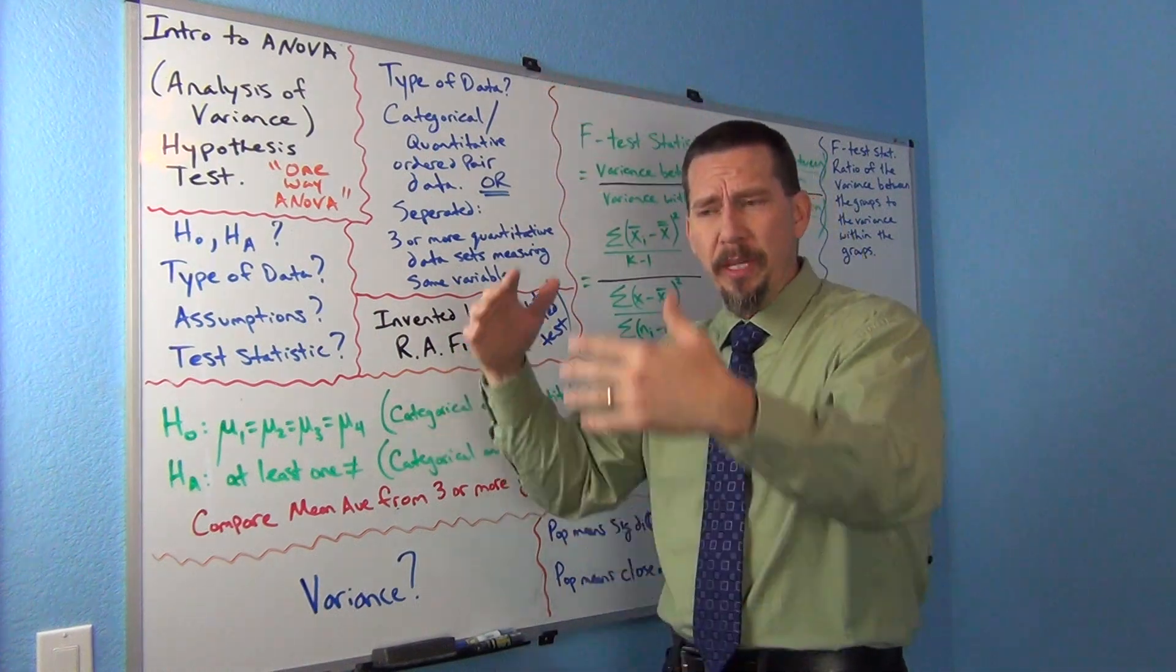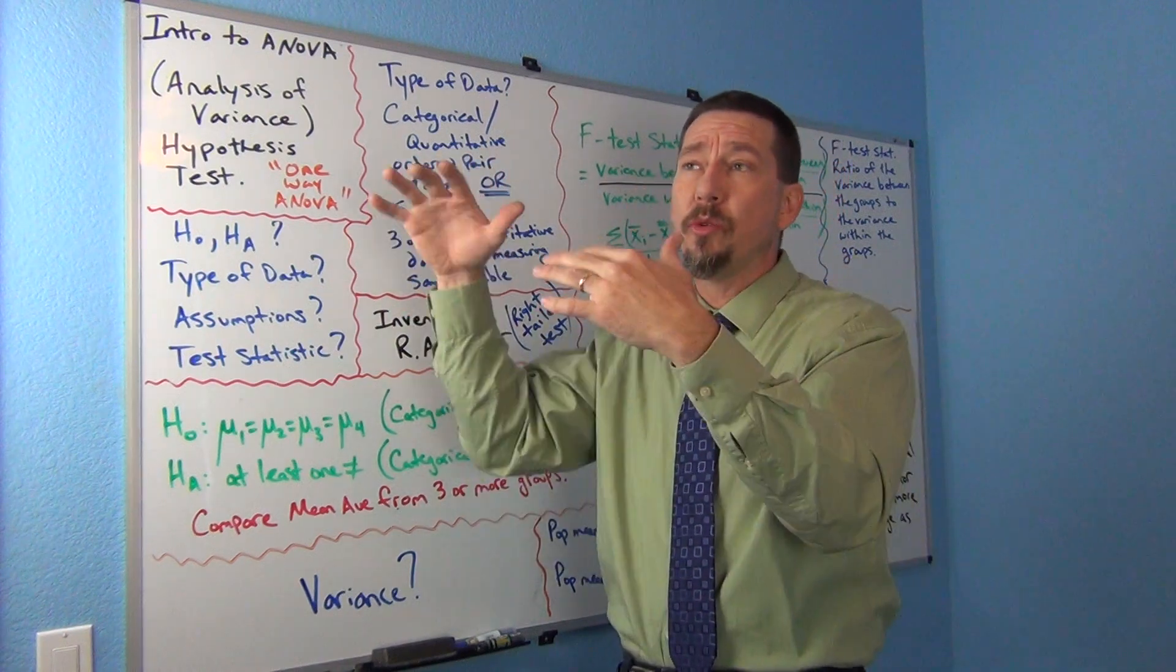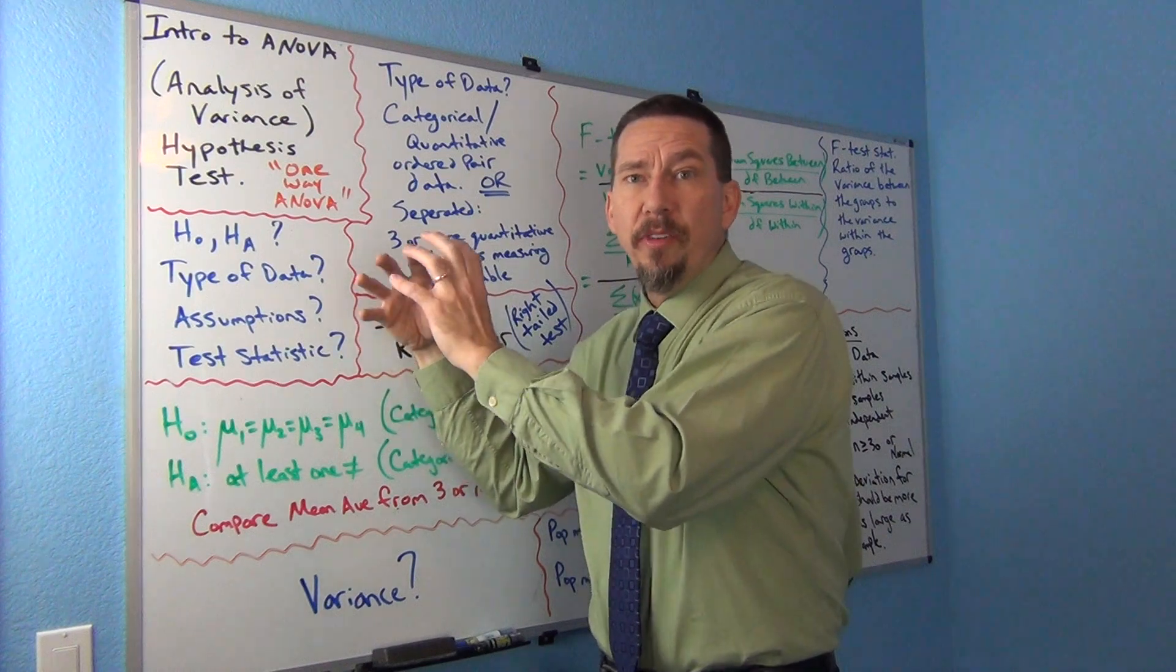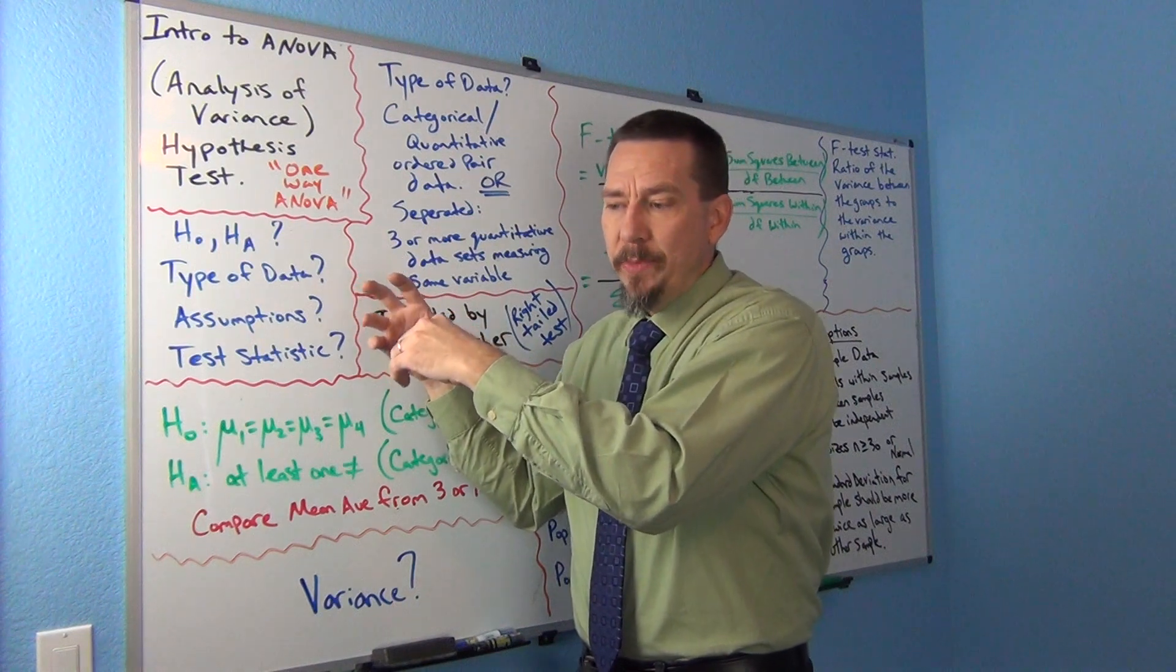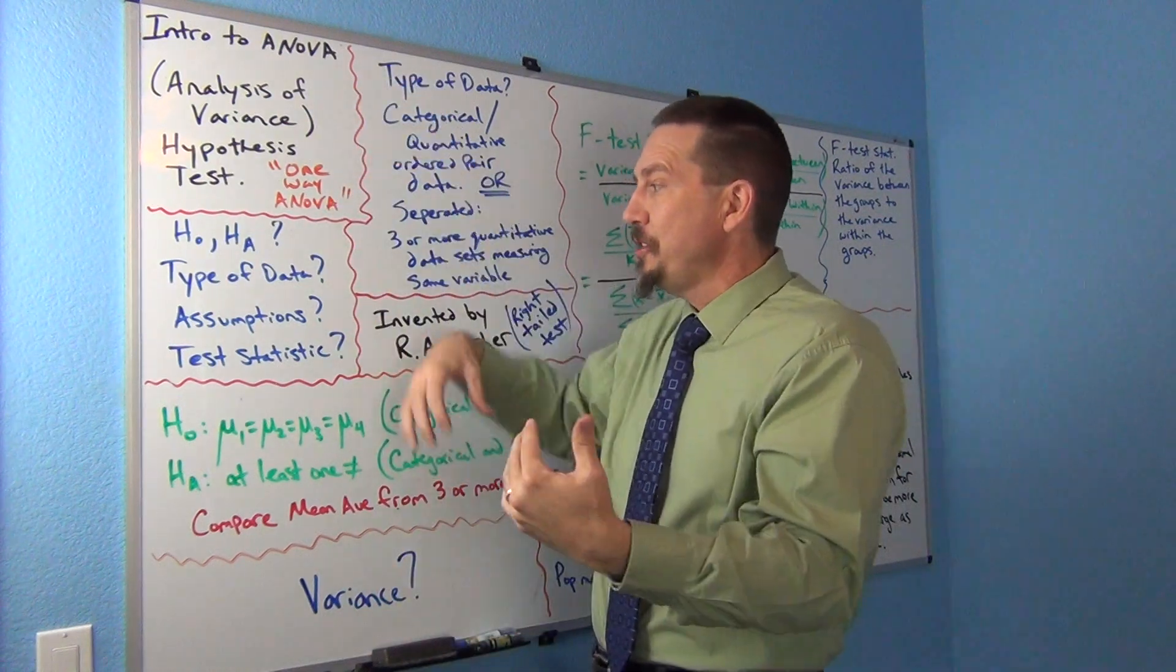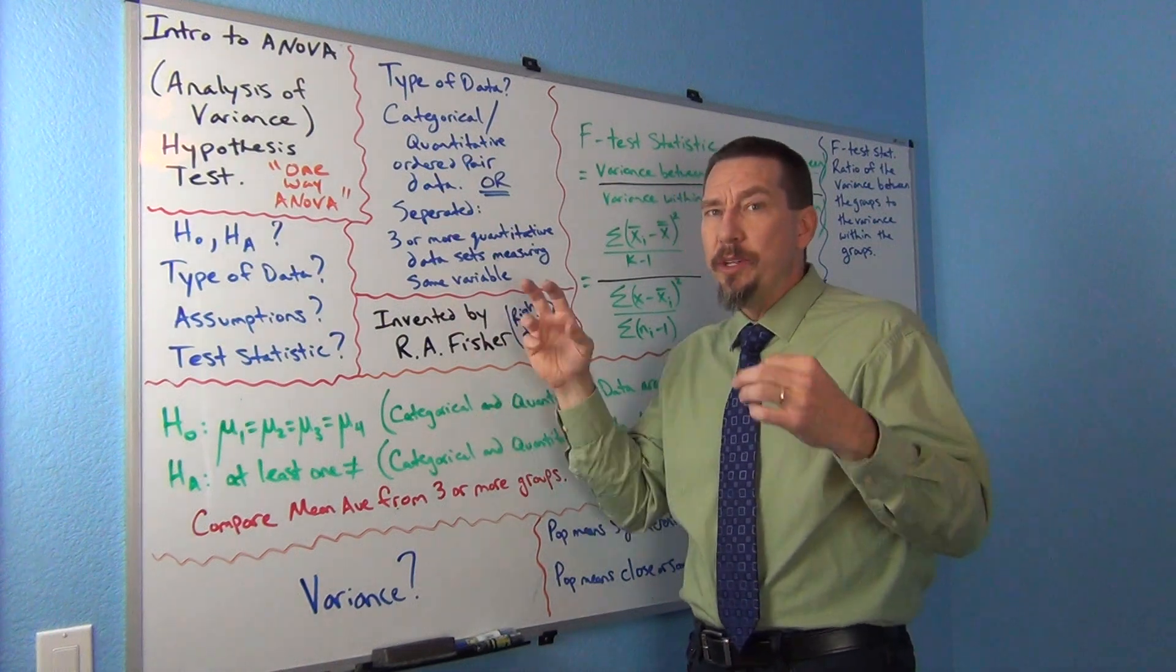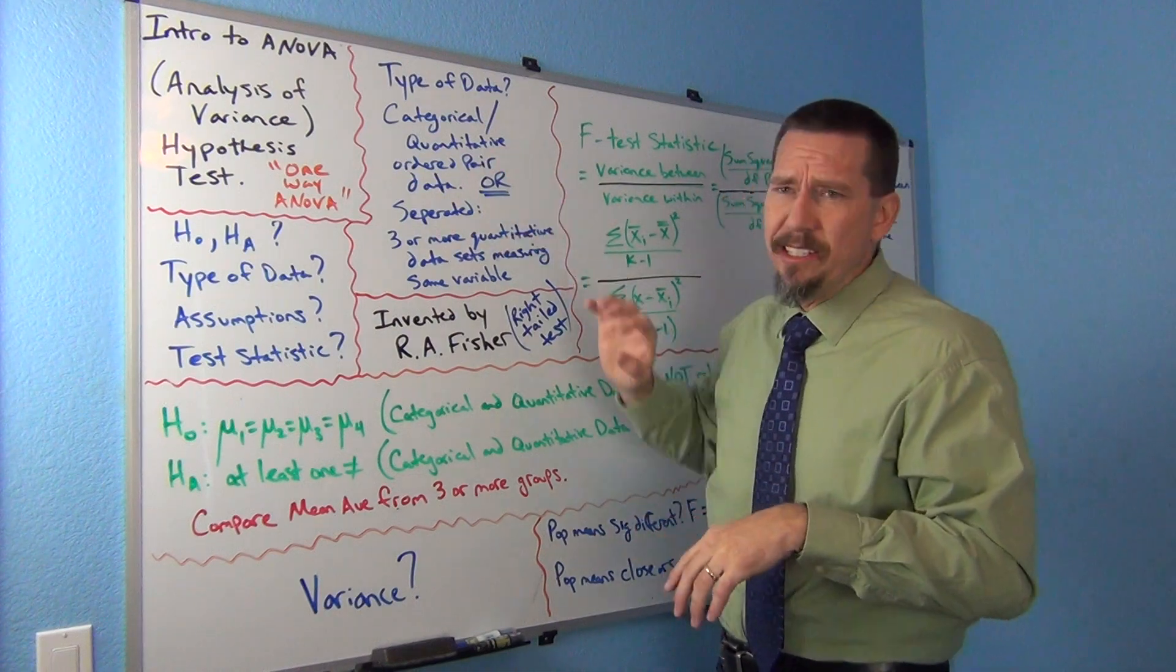A lot of computer programs would want the data like that. They'll have a categorical data set and a quantitative data set right next to each other from the same people. But really what you really want to think of in ANOVA though is when you can separate it out. So if I had all the people from each country, I could separate them out. I could sort. You could sort it out and I could put all the salaries from people from the U.S. in one data set and all the salaries from people from France in one data set and all the salaries from people from Canada in one data set. I could separate them out. And that's a good way of thinking about it because once you separate it out, now you've got usually three or more quantitative data sets and they're all measuring sort of the same variable. In this case it would be salary.